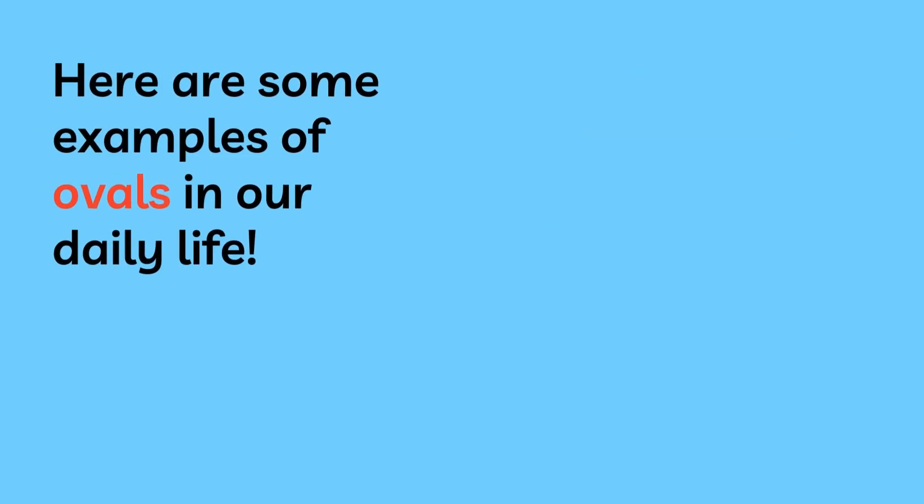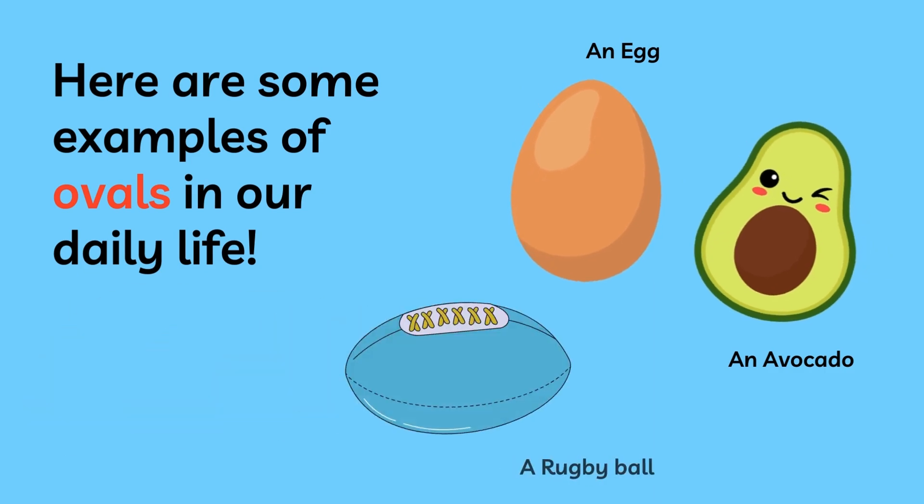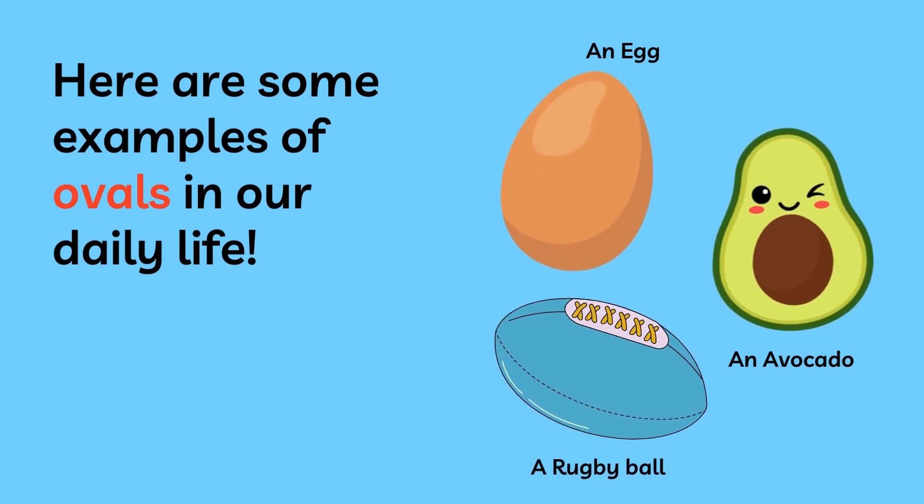This is an oval. Here are some examples of an oval: an egg, an avocado, a rugby ball.